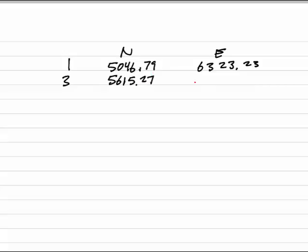Point 1 has a northing of 5046.79 and an easting of 6323.23. Point 3 has a northing of 5615.27 and an easting of 6304.67.